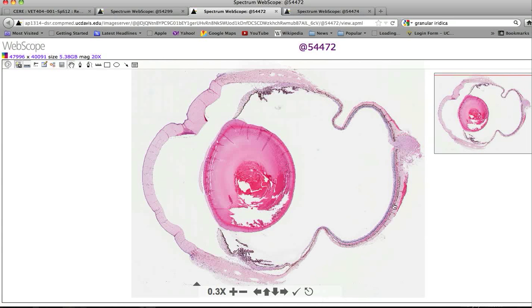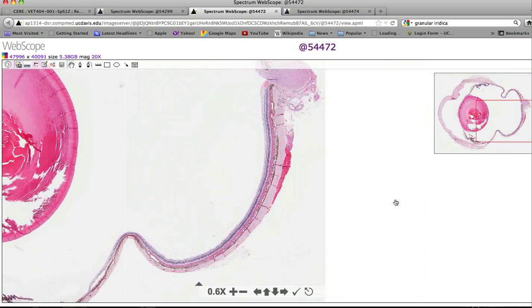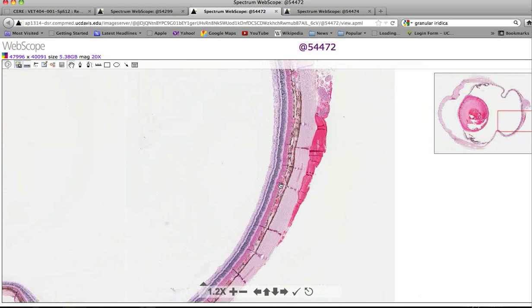We can also make out the tapetum of the cat at low magnification, and we'll start there to continue with the choroid.